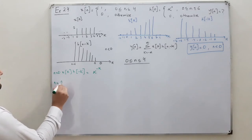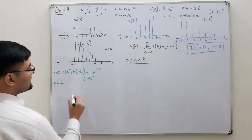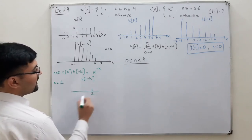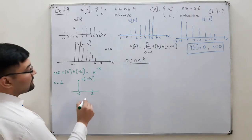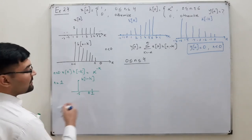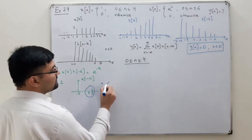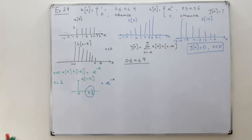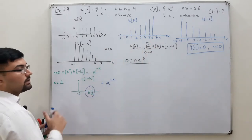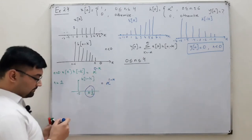For n = 1, you draw h[1−k] — that is h[−k] shifted to the right by one unit. The minimum position is at k = 1 and the maximum position (n minus 6) is at k = minus 5. Now the overlap occurs at k = 0 and k = 1. The answer is h[1−k] = alpha to the power 1 minus k, and for n = 0 it was alpha to the power 0 minus k.